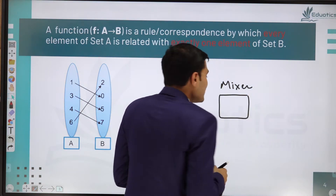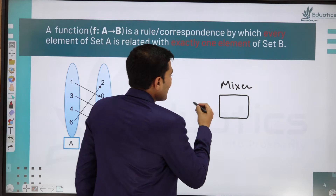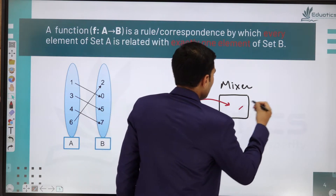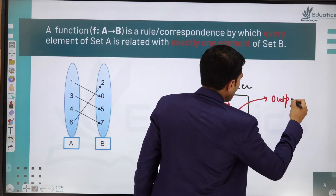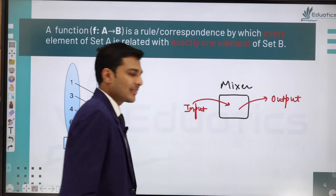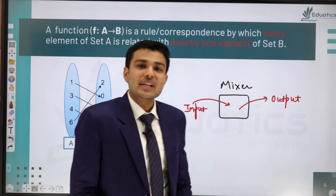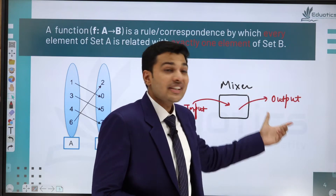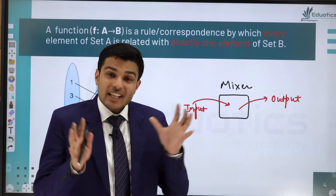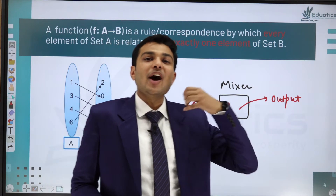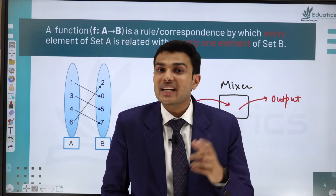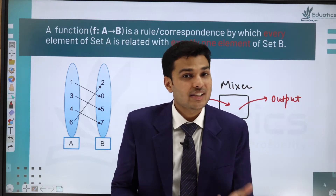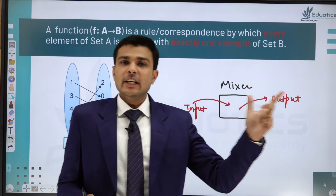So in a mixer, we add input and we get output. For example, if you add mango plus milk, you get mango shake as output. But if you give mango as input, you cannot get both banana shake and mango shake — that's not possible. For one input, there is only one output.